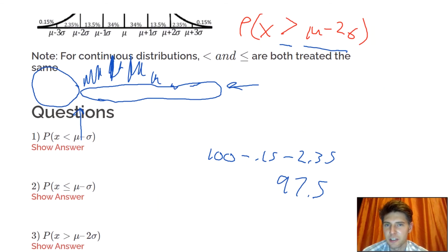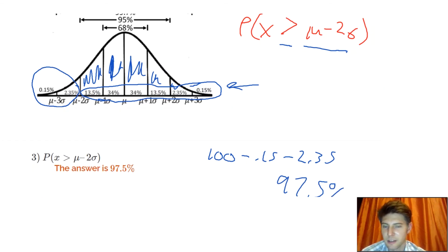And let's check it. It should be 97.5%. 97.5%. That's it. That's how we do it. The greater than told us to shade above. And we shade above the mu minus 2 sigma.